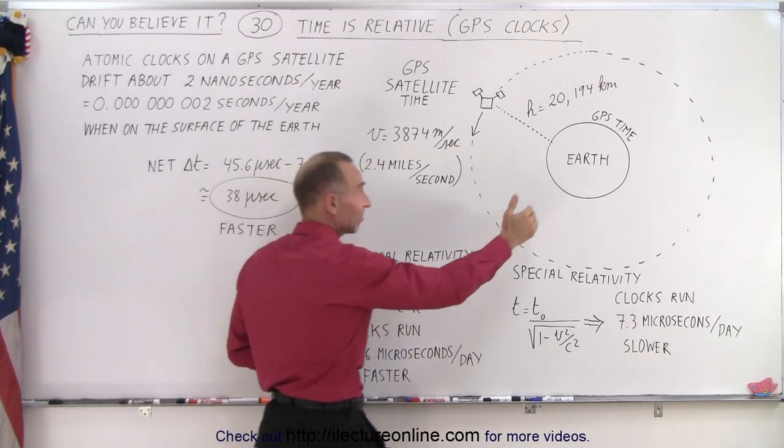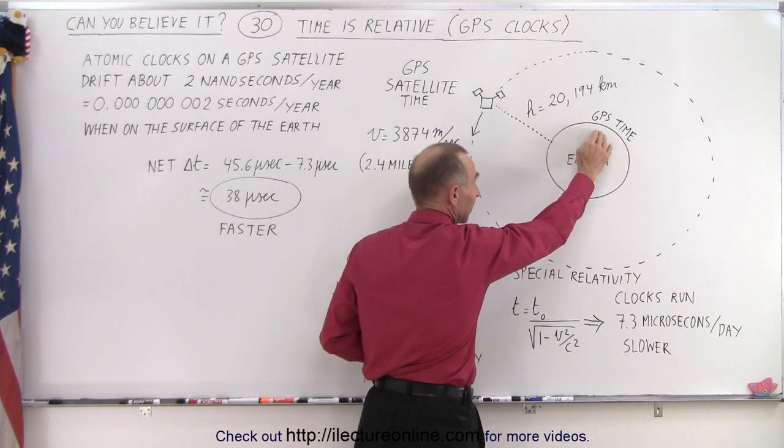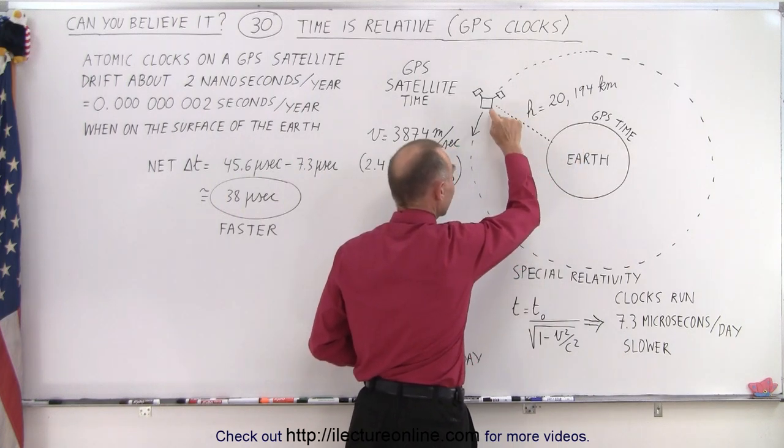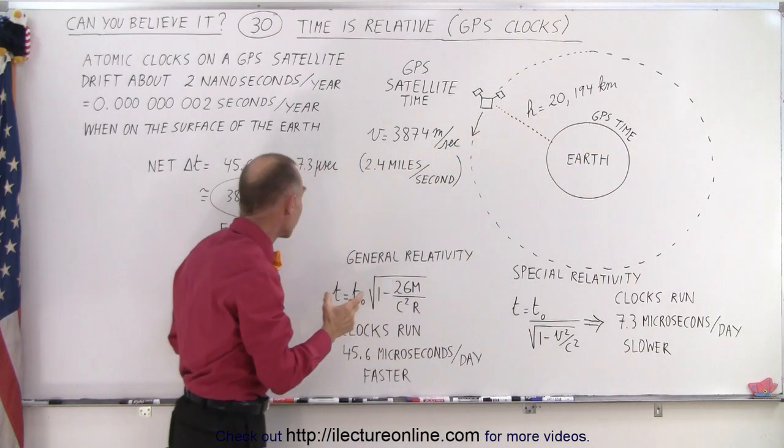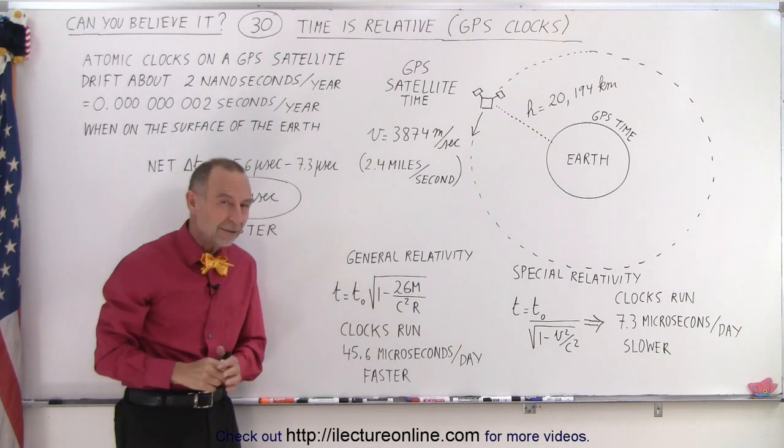And so when we keep GPS time on the Earth, which is virtually perfect, we can see that the clocks on the satellites will deviate 38 microseconds every single day.